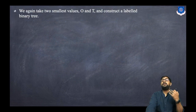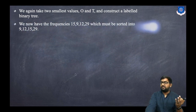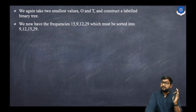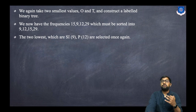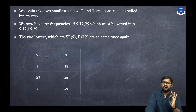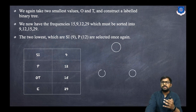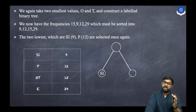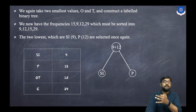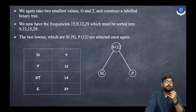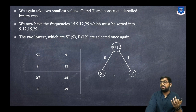After combining o and t into ot=15, the remaining frequencies are: si=9, p=12, ot=15, e=29. Sorted: 9, 12, 15, 29. The two lowest are si=9 and p=12. We combine them to get sip with weight 9+12=21 and draw the binary tree for sip, incorporating the already-drawn subtree for si (s on the left with 0, i on the right with 1), with p as the other child.